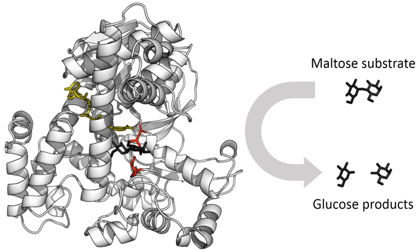The word enzyme was used later to refer to non-living substances such as pepsin, and the word ferment was used to refer to chemical activity produced by living organisms. Edouard Buchner submitted his first paper on the study of yeast extracts in 1897. In a series of experiments at the University of Berlin, he found that sugar was fermented by yeast extracts even when there were no living yeast cells in the mixture. He named the enzyme that brought about the fermentation of sucrose «zymase». In 1907, he received the Nobel Prize in Chemistry for «his discovery of cell-free fermentation».